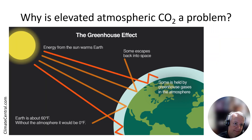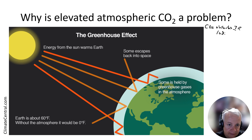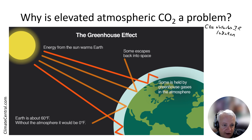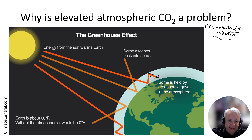So why is this a problem? It's a problem because of the greenhouse effect. The greenhouse effect itself is not a problem — it's caused because CO2 molecules absorb infrared radiation. When energy from the Sun warms up the Earth, the Earth emits some of that heat back upward as infrared radiation. CO2 molecules in the atmosphere catch some of that infrared radiation and radiate it back to the Earth, causing the Earth to be warmed.